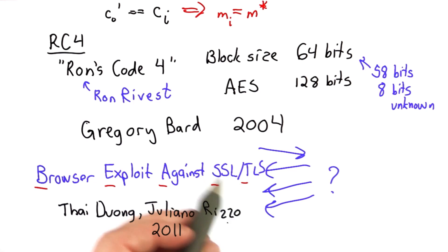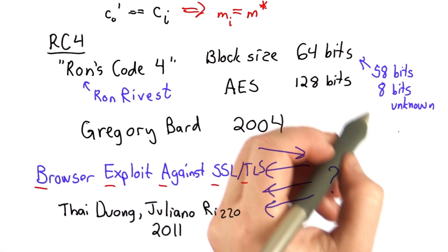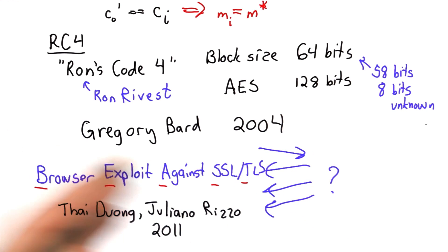And this was demonstrated quite recently in 2011, showing a way that you could use this and this technique of controlling many of the bits in the first block to break an authentication token for a PayPal cookie. So this is quite a powerful attack. If you only need to guess 8 bits at a time, you expect to only need 128 guesses for each byte.